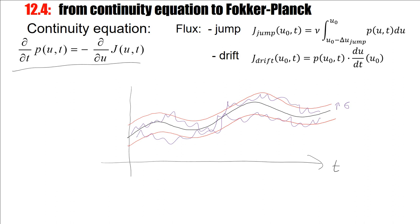All trajectories stay in that region, and the width corresponds to the standard deviation sigma, characteristic for the free solution. We went from the continuity equation to the Fokker-Planck equation, and the free solution is a Gaussian distribution whose center is related to the deterministic trajectory and whose width is related to the diffusion constant, or the parameter sigma that appeared in the equation.